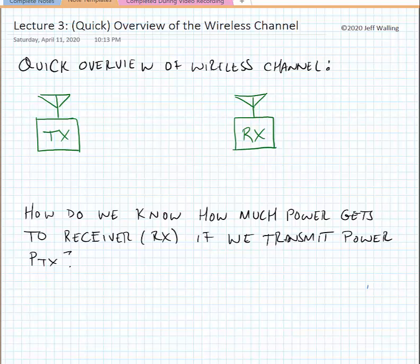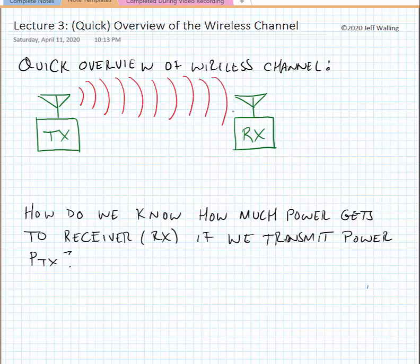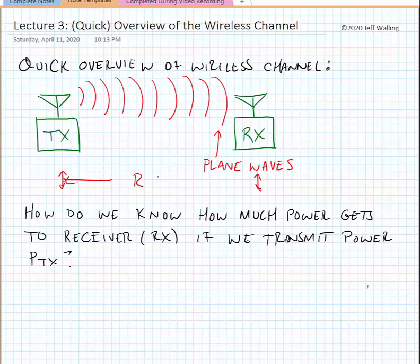Today we're going to do a quick overview of the wireless channel. We have a transmitter labeled TX and a receiver labeled RX. The transmitter transmits radio waves from an antenna and they travel towards the receiver. By the time they reach the receiving antenna, the sphere radiating from the transmitter can be approximated as a plane wave at the receiver. The transmitter and receiver are separated by some distance r meters.